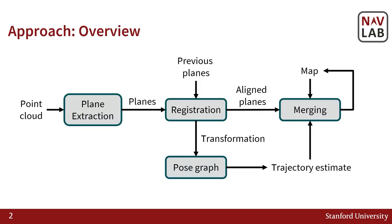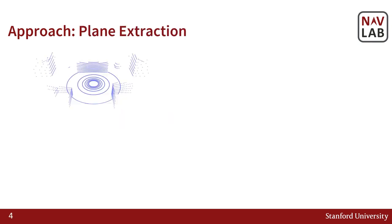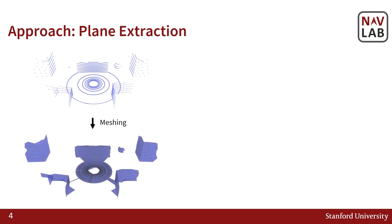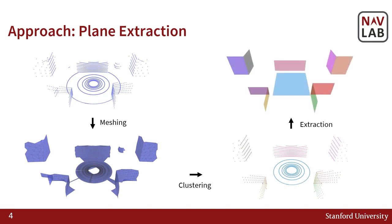Here we show an overview of the steps of our approach. At each frame, we begin by extracting planes from the input point cloud. Plane extraction consists of three steps. First, the point cloud is meshed and surface normals are computed for each triangle in the mesh. Next, the mesh is clustered using GraphSearch to obtain clusters of points which belong to the same plane. Finally, a plane is extracted for each cluster of points.